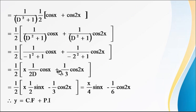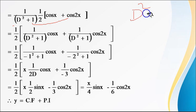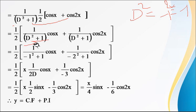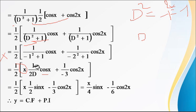Separating the PI: PI = ½ · [1/(D²+1)]·cos(x) + ½ · [1/(D²+1)]·cos(2x). For the first term, replace D² with −a² where a = 1, giving −1+1 = 0 — this is the failure case. Differentiate D²+1 with respect to D to get 2D, then multiply by x: x · 1/(2D) · cos(x). Since 1/D means integration, ∫cos(x)dx = sin(x).